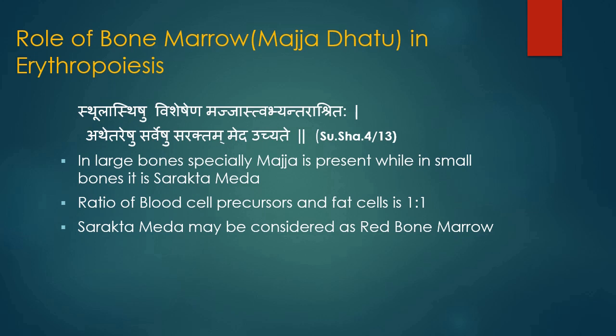Shushruta has mentioned Sarvanga netra gaurav, i.e. heaviness in the eyes and body, and in Ashtang Sangrah, Rakta gaurav has been mentioned as a feature of Majja vraddhi. Rakta gaurav indicates increased viscosity of blood as present in polycythemia. The features of Majja pradoshaj vikar, meaning disorders due to vitiation of Majja dhatu — like murcha i.e. fainting, bhram i.e. dizziness, timir darshan i.e. perception of darkness — manifest in conditions of anemia due to blood disorders or decrease of blood volume. This means our Acharyas were well versed about the relation of Majja dhatu and erythropoiesis.